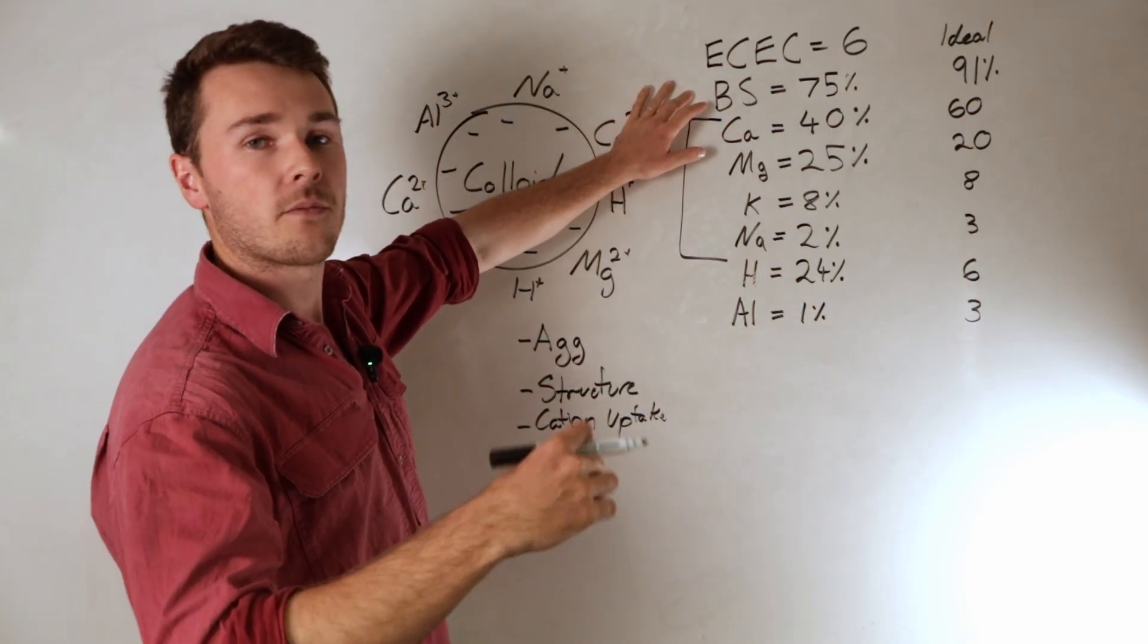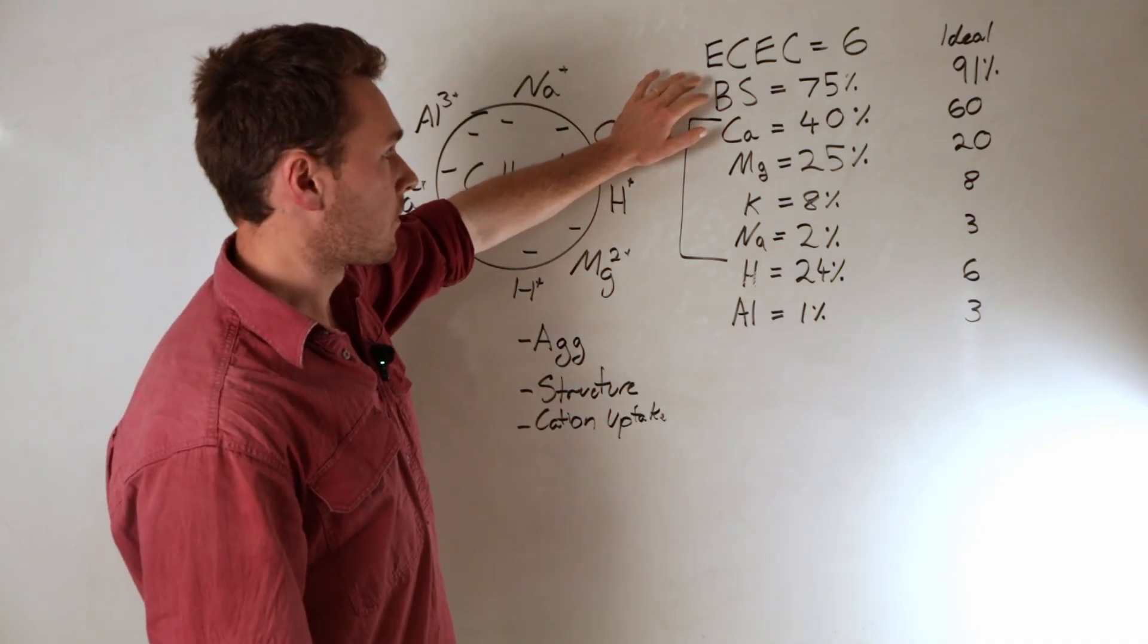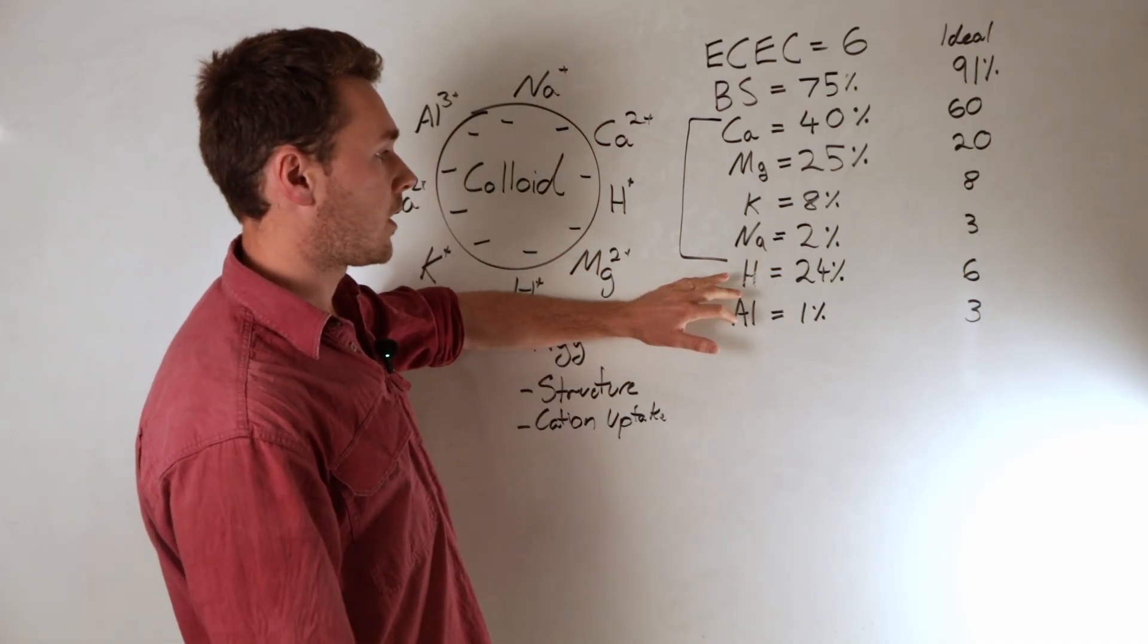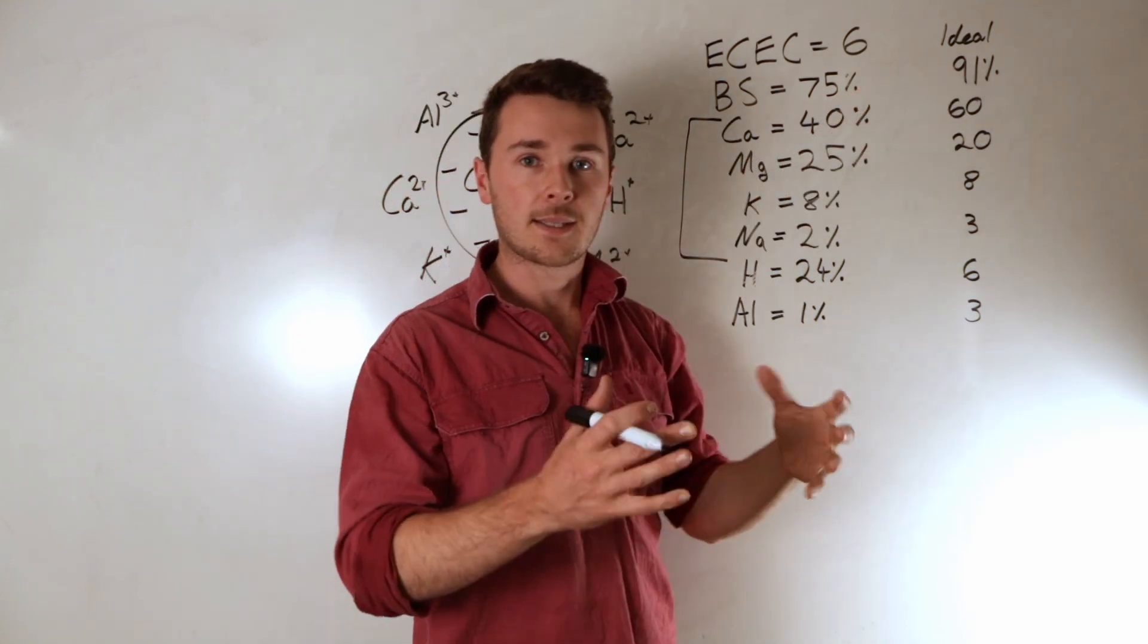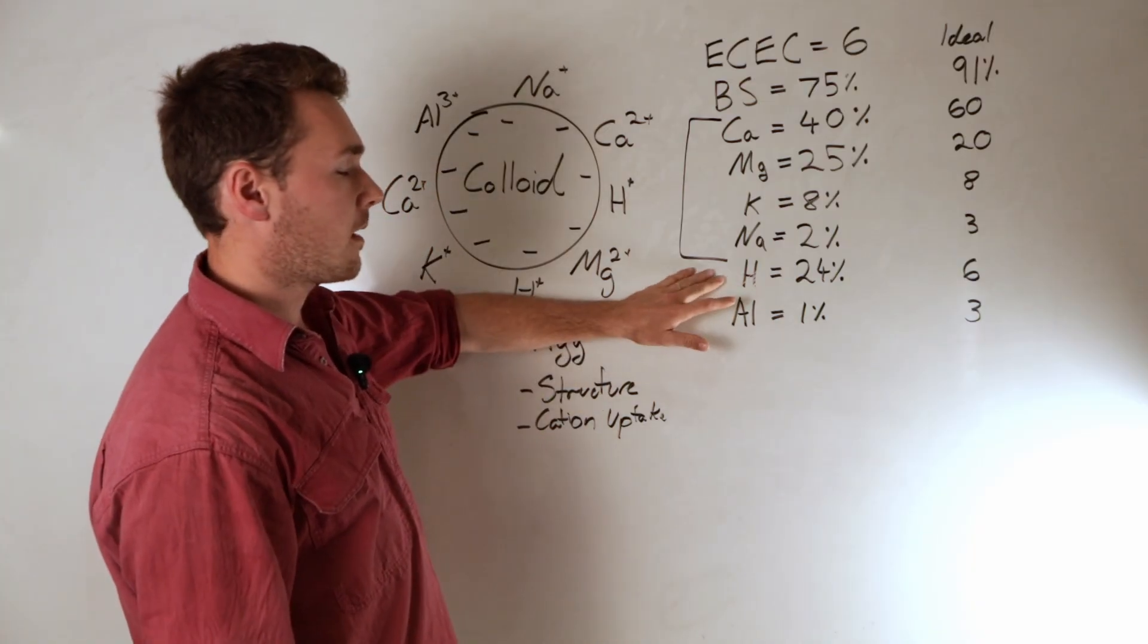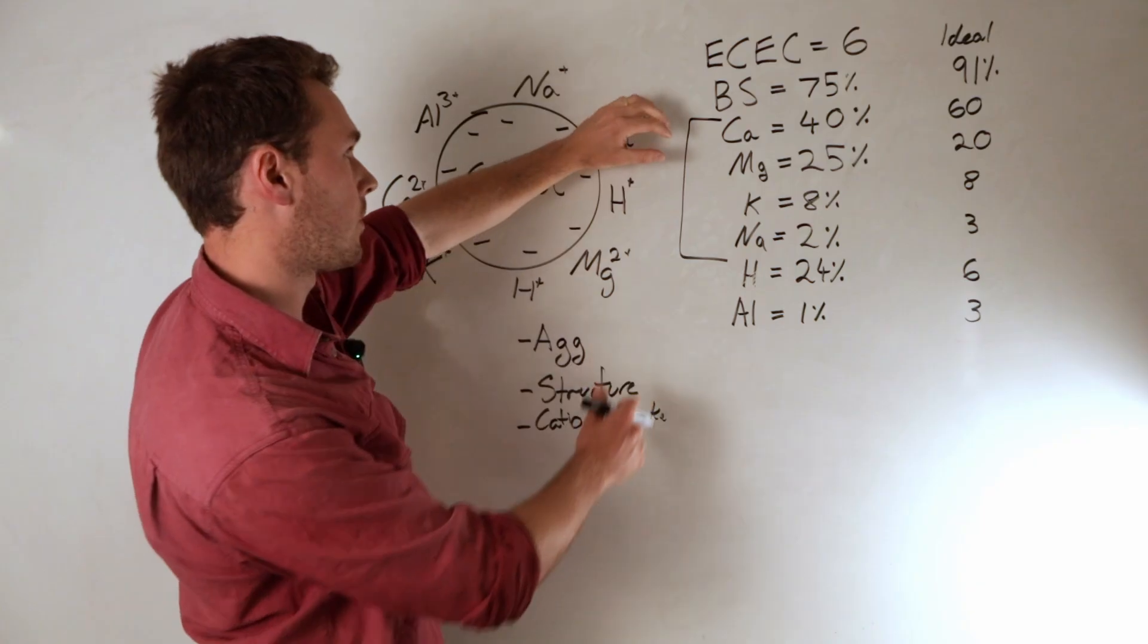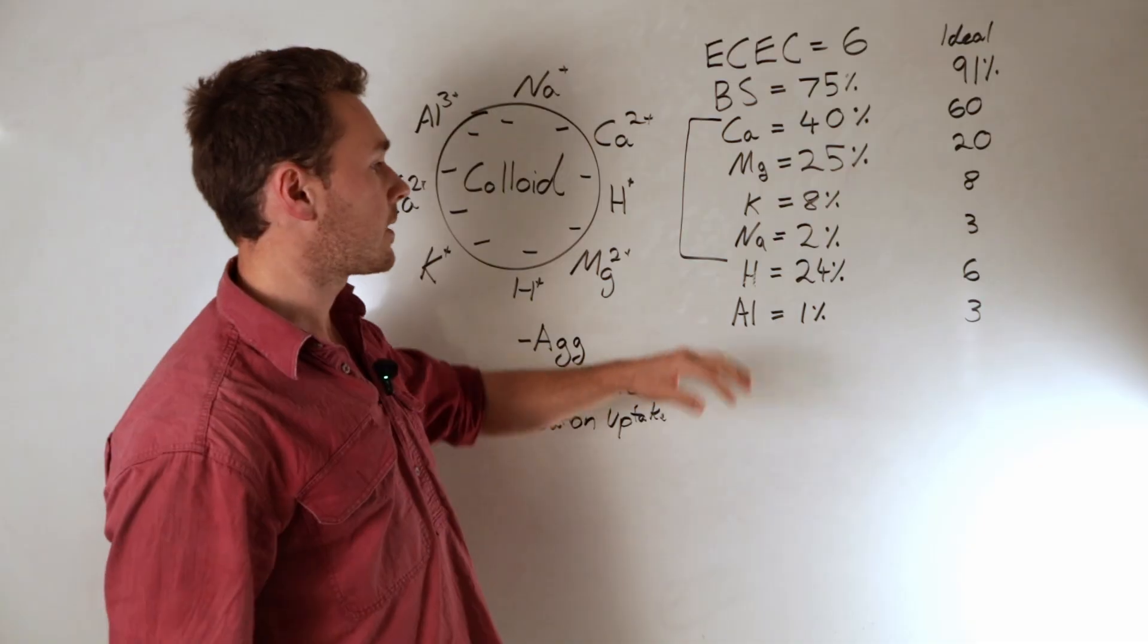The base saturation is effectively how full or how big your CEC is. So currently it's 75% full. The rest of it you can consider as empty or hydrogen and aluminum. We don't want too much aluminum because that can cause toxicities, and likewise hydrogen, that's going to cause acidity. So ideally we want about 90% of that capacity full. We want a bit of hydrogen because we want a little bit acidic because that's just where it's ideal for crop production. But overall we want it more on that full side. So ideally we want it at 91. Currently, say for this soil, it's 75. So there's room for us to add stuff without knocking anything out apart from the hydrogen.